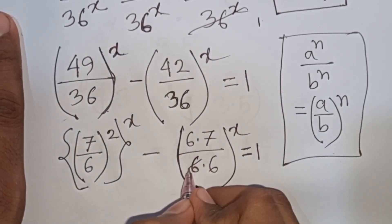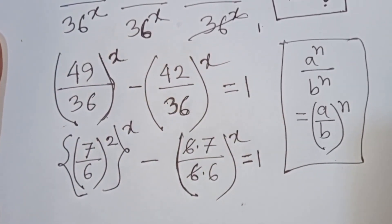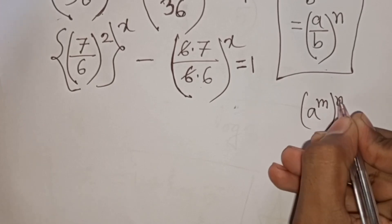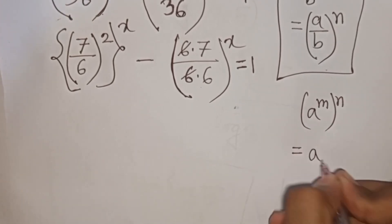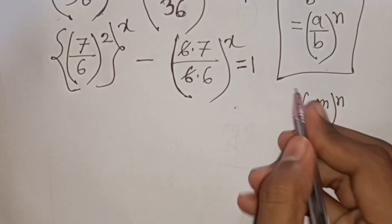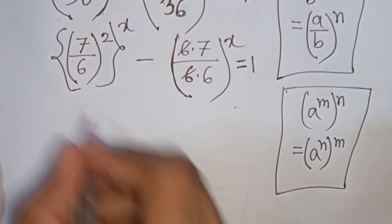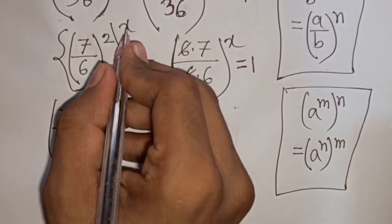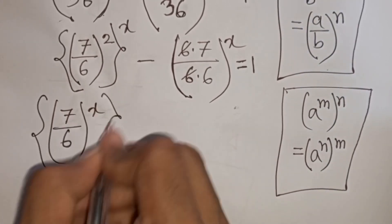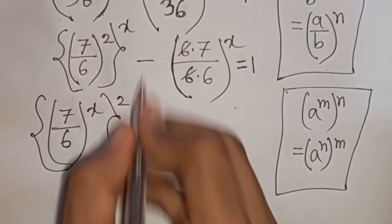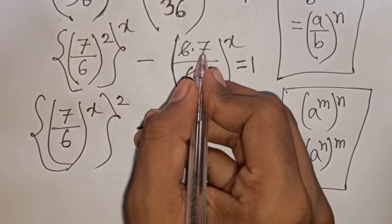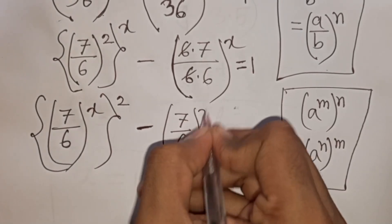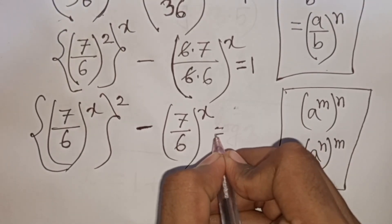Now we see the 6s cancel. We apply the rule that a^m to the power n equals a^n to the power m. So we can write (7/6) to the power x, then squared, minus (7/6) to the power x equals 1.